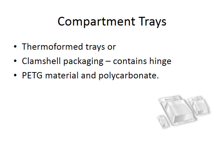The last type is compartment trays. They look a bit like blister packs except the whole package is the same material. These could be thermoformed trays where you place your device inside. There's a specific type called clamshell packaging, which has a hinge that opens up — you'd see these in consumer goods like headphones and batteries. They offer very good product protection. Generally polyethylene terephthalate (PET) or polycarbonate, a hard plastic, is used.